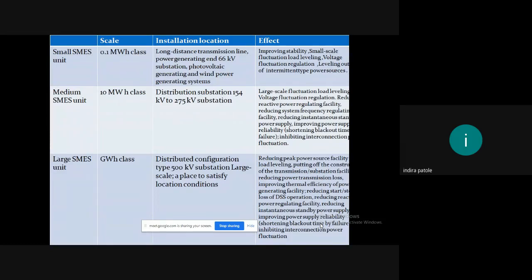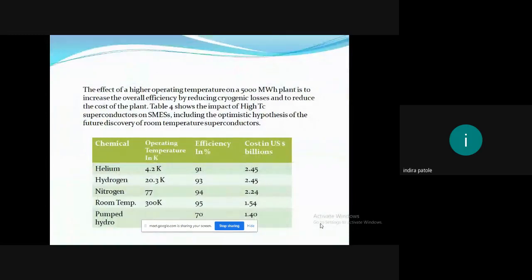So, the different kinds of SMES units, medium SMES units, large SMES units, the whole scaling, the installation location, the effect it has on the grid and the electric vehicles. Please go through it. You all will understand. The effect of higher operating temperature on a 5000 MWh plant is to increase the overall efficiency by reducing the cryogenic losses and to reduce the cost of the plant. So, this was a table and it consists of the operating temperature, the efficiency and the cost of the whole plant when we use these different chemicals as a cryogenic liquid. Please go through that as well. And the efficiency as well differs. Accordingly, but keeping in mind there can be economical point of view, we select the cryogenic liquid, but always the best what is needed is chose.